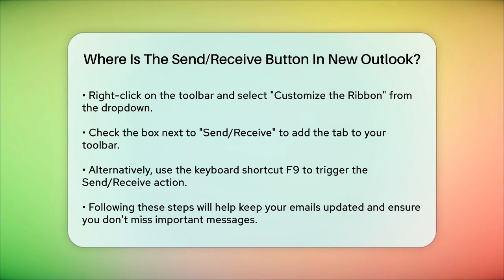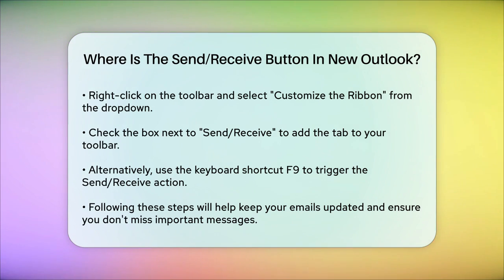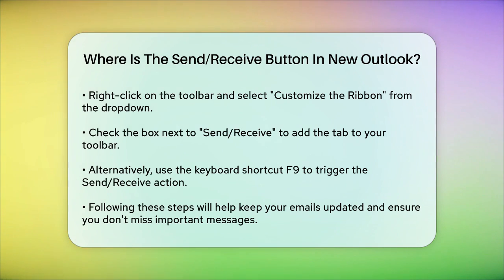Another way to access this feature is through the keyboard shortcut. Pressing F9 on your keyboard will trigger the Send Receive action, syncing all your email folders. By following these steps, you'll be able to find and use the Send Receive button in the New Outlook, keeping your emails up to date and ensuring you never miss an important message.